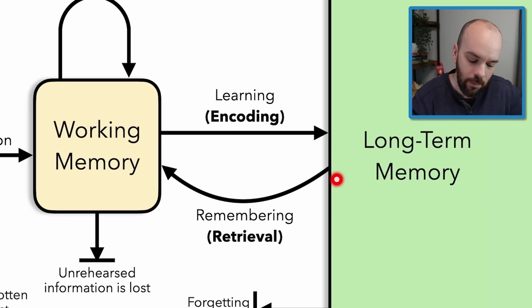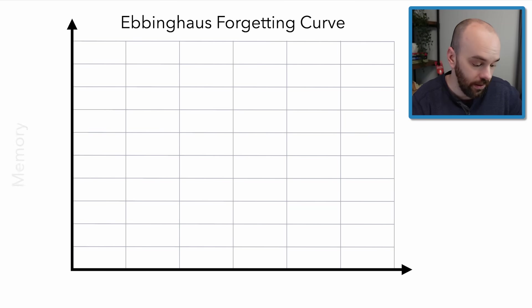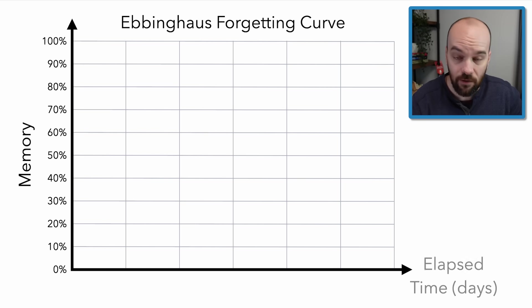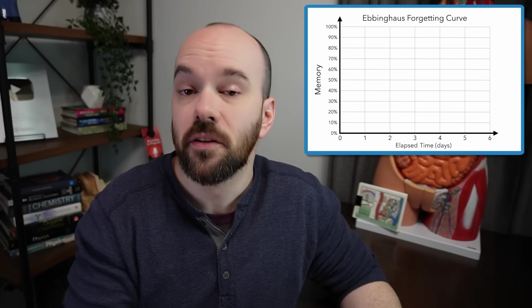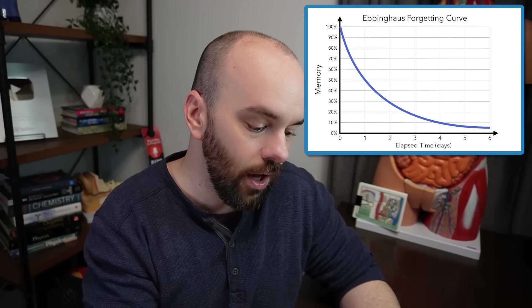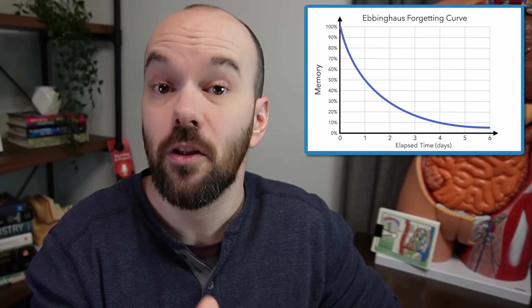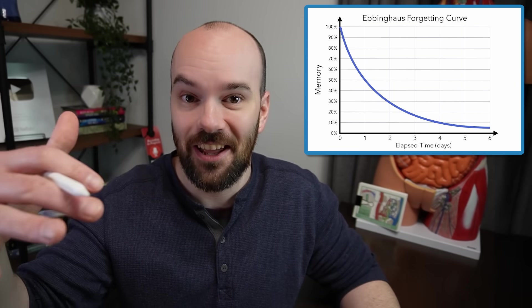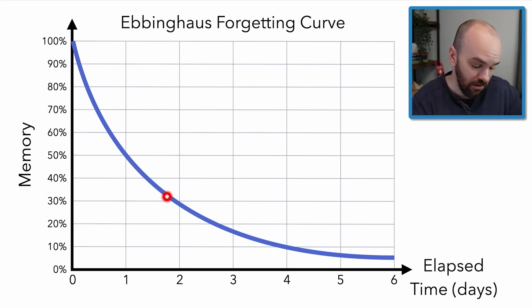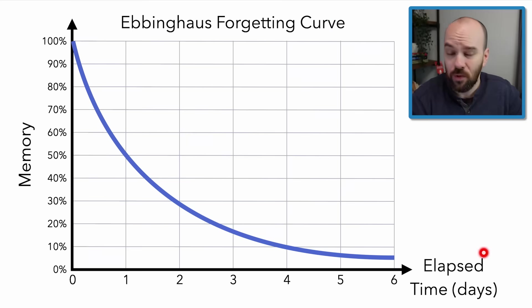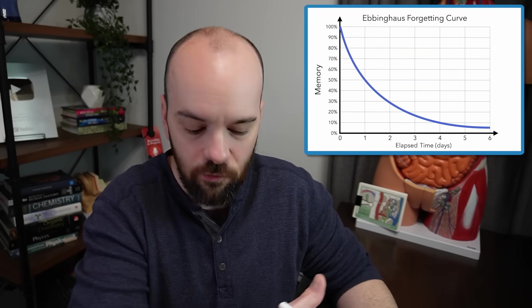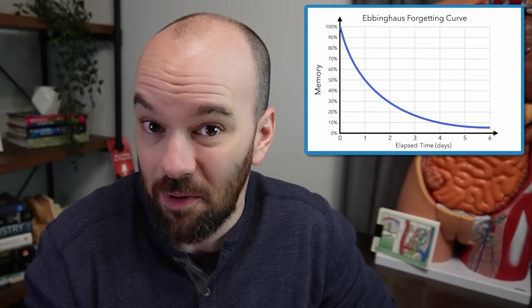So encoding is about making connections — really strong connections between new information and what we already know. Retrieval is what we do after we've learned something to build it up and solidify it in long-term memory so we don't forget it over time. The next graph I'm going to show you is called the Ebbinghaus forgetting curve, and it really illustrates this forgetting over time. It has two axes: a memory axis from 0 to 100%, and an elapsed time axis showing the number of days since you learned something. Let's say you're studying the digestive system and you're at 100% of what you learned at the end of that session. Within the next day or so, you've probably forgotten about half of it. After another day, you may be down to 30%. After a week, you're not remembering much at all. This forgetting curve is totally normal — it happens with almost everybody.